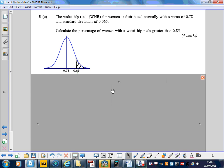OK, so this is the curve here. We've got our mean of 0.78 in the middle, and we're interested in the percentage of people that have got a waist-to-hip ratio of 0.85 and above. So it's this tail end of the curve that we're looking at finding.